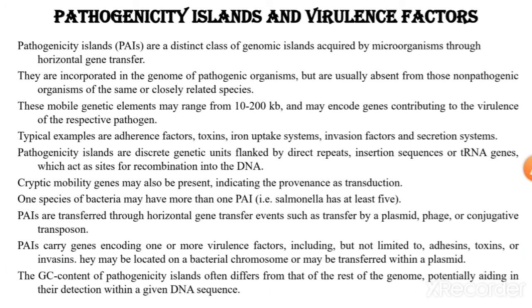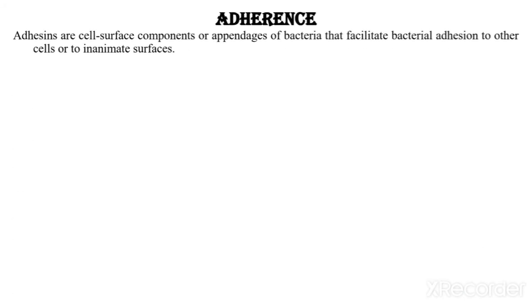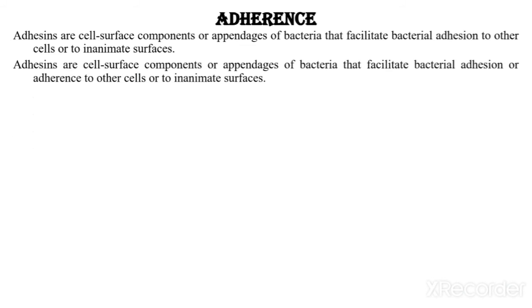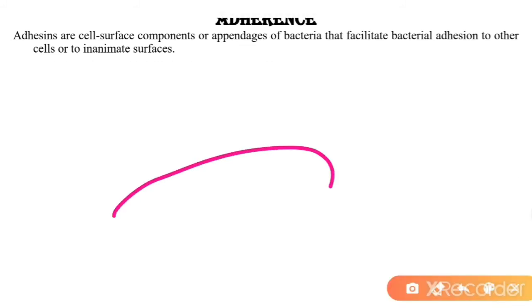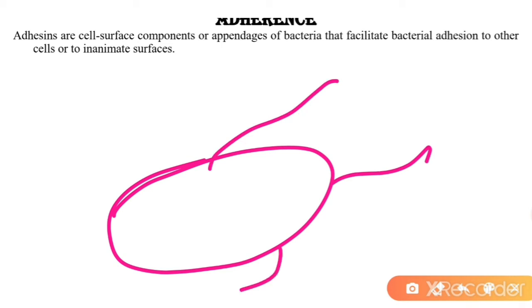The GC content of pathogenicity islands often differs from that of the rest of the genome, potentially aiding in their detection within a genomic DNA sequence. Next point: adherence. Adhesins are cell surface components or appendages of bacteria that facilitate bacterial adhesion to other cells or to inanimate surfaces.